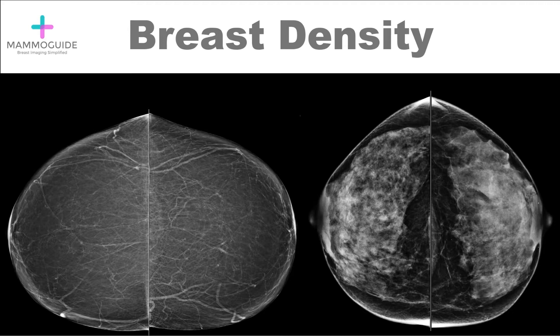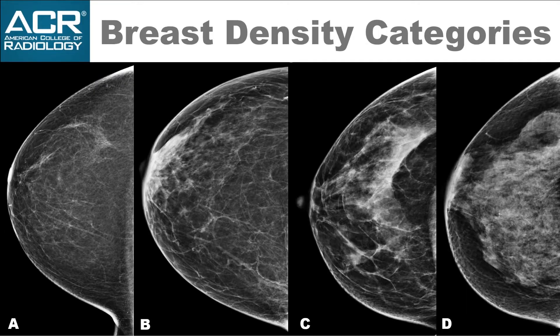You can see the great disparity in these two mammograms. The American College of Radiology BIRAD system has divided breast density into four main categories, A through D, and you can see the gradual increase in density among these examples.